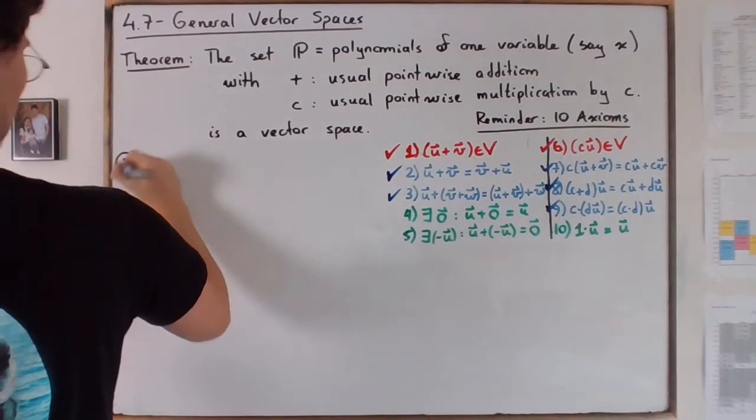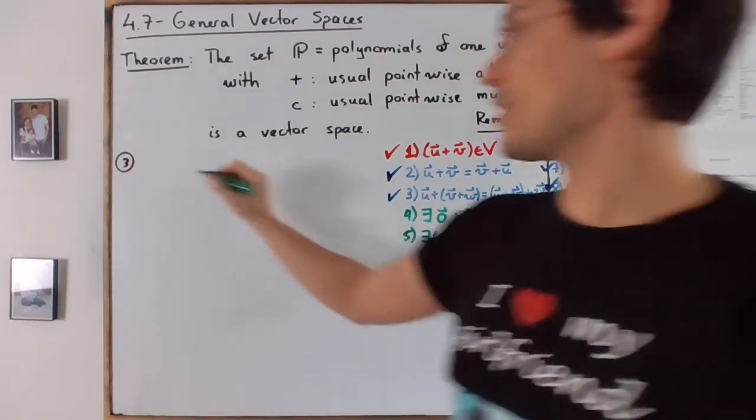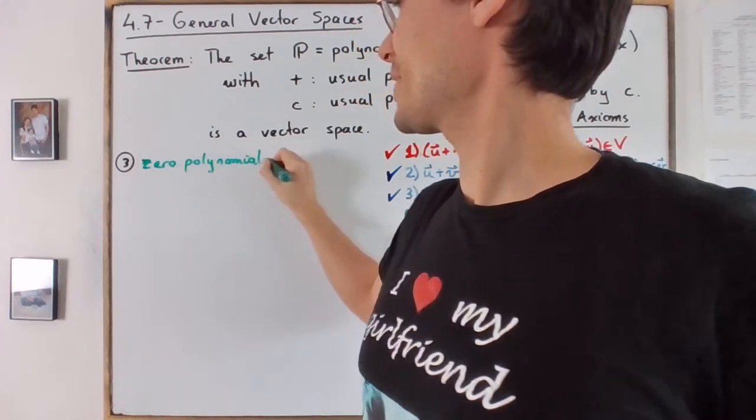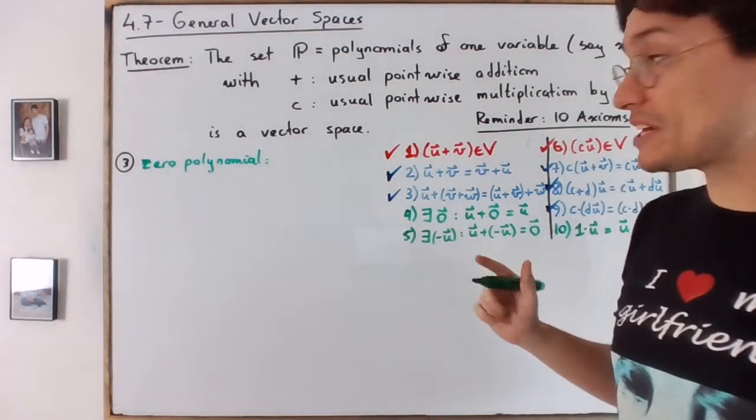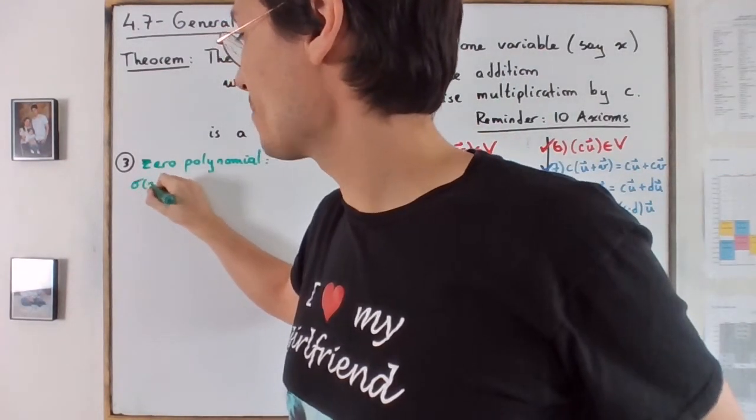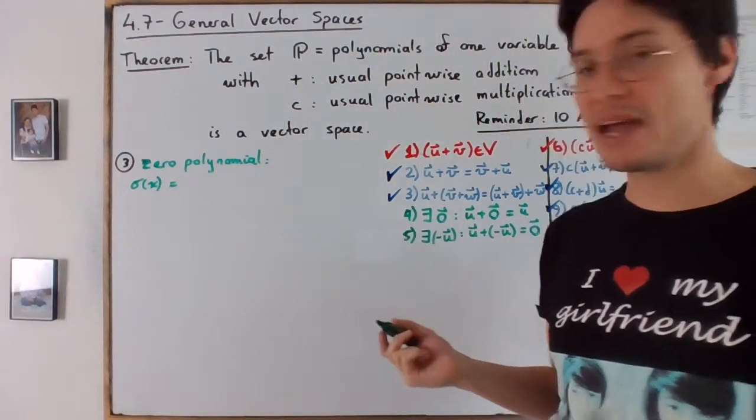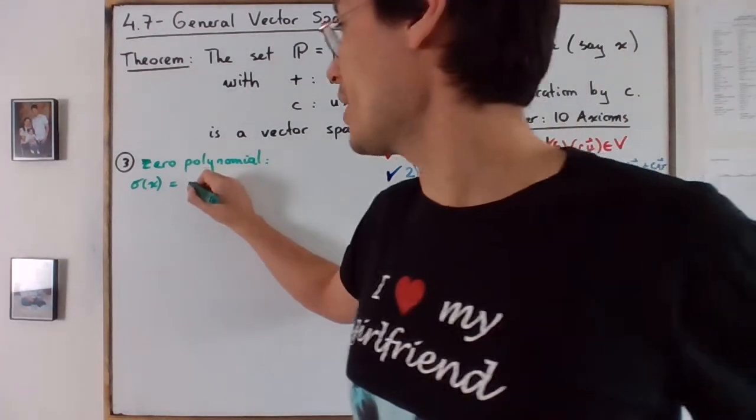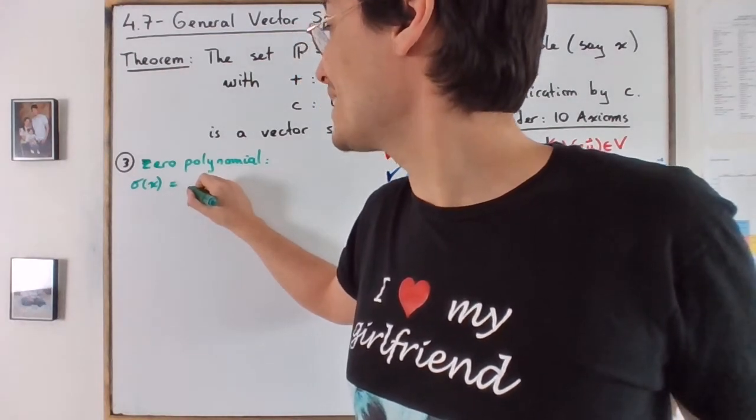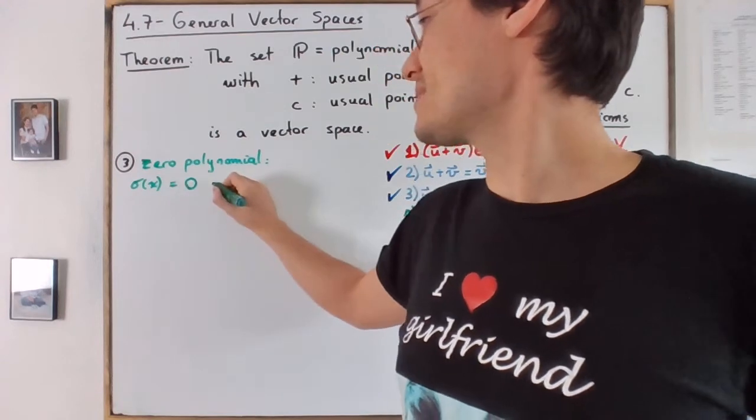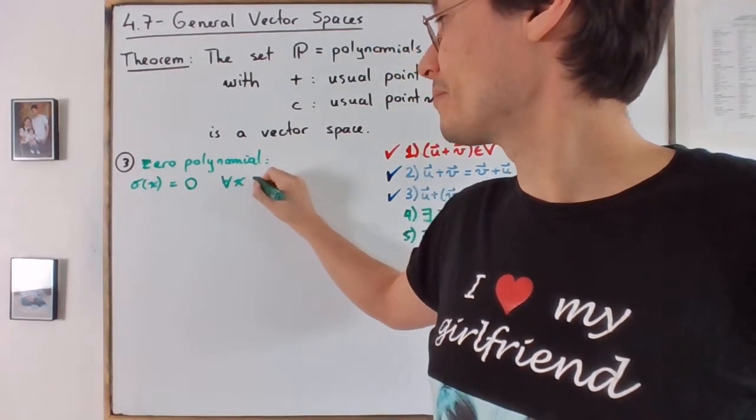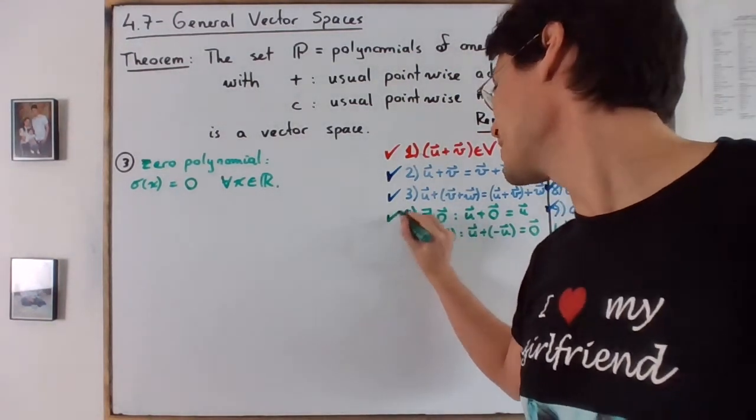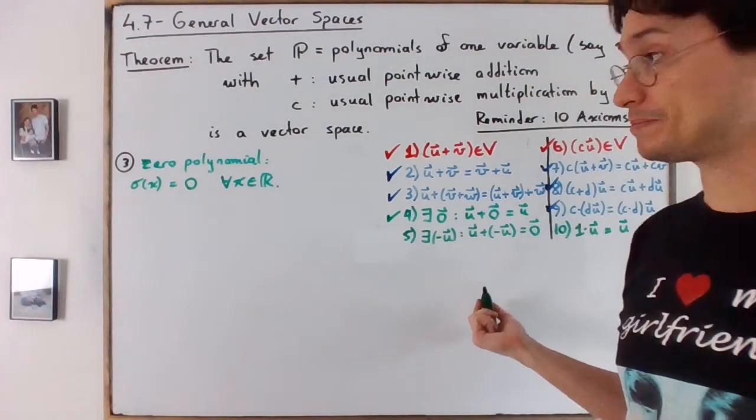So we are now at step number three. So first of all, the zero polynomial. So I mean, we don't really have a notation for it. I will call it O of x, just like to be consistent with my putting something circular for the zero polynomial. And this is simply the polynomial that's identically zero. So like O of x is equal to zero for every x, right? So this is the zero polynomial. And I'm not going to check that it satisfies four. But it obviously does for the same reason as before.